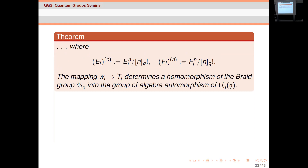Lusztig introduced a family of automorphisms involving quantum integer deformations of classical values, and through this he determined a homomorphism of the braid group onto the algebra of automorphisms. Associated to any Lie algebra you have its Weyl group — for the A-series it's just the symmetric group. The braid group is obtained by removing from the generators-and-relations presentation of the Weyl group the relation that says each transposition squares to the identity, giving a cover of the Weyl group. Lusztig showed there is an action of this braid group on U_q(g).